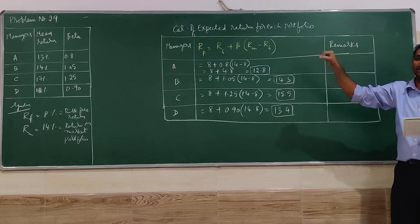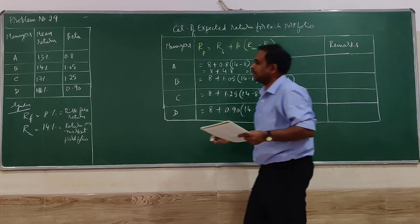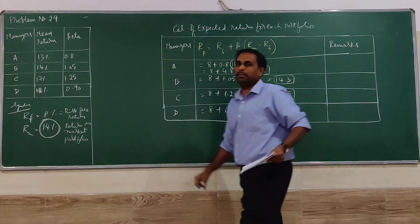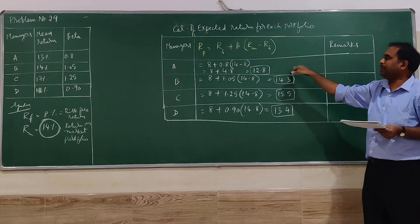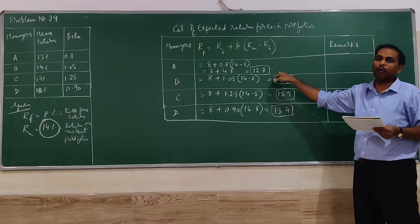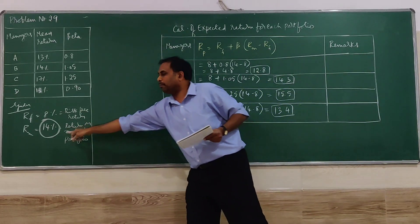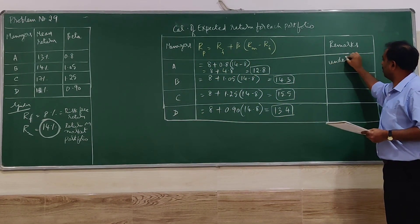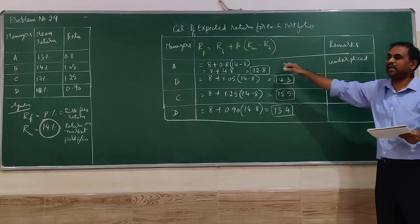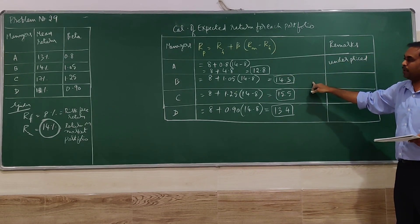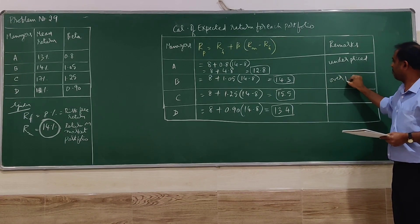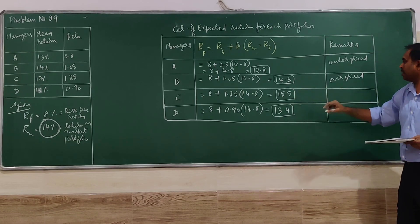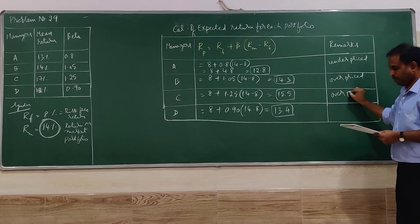Now we have to compare and check out which is the good one. We have to compare each performance with the market performance. Market performance is 14%. Manager A has got 12.8, which is less than 15.4, less than the market, so the remark will be underpriced. 14.3 is more than the market, doing good. 15.5 is more than the market, doing good.